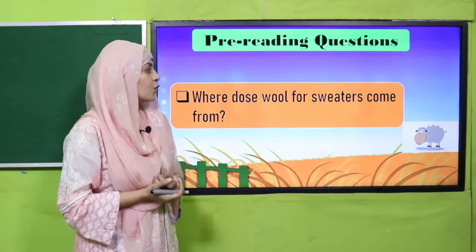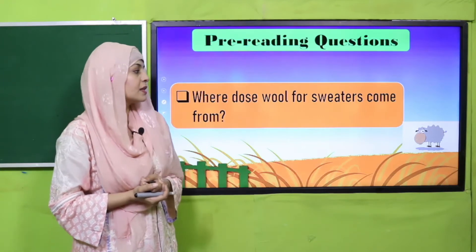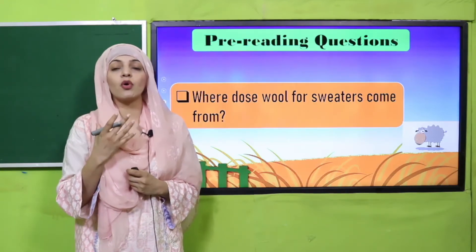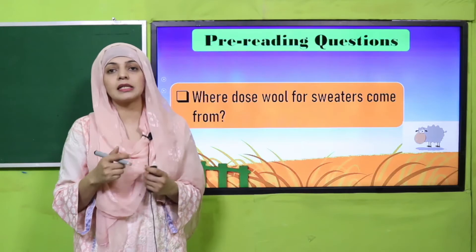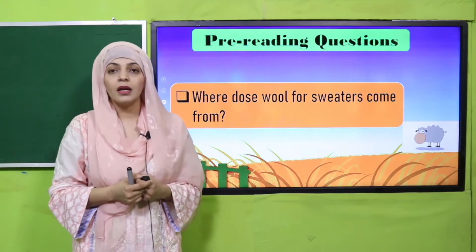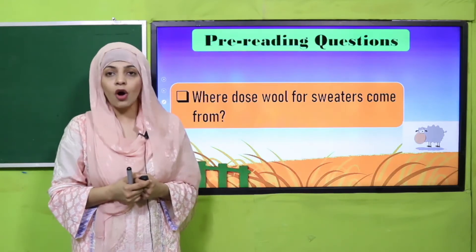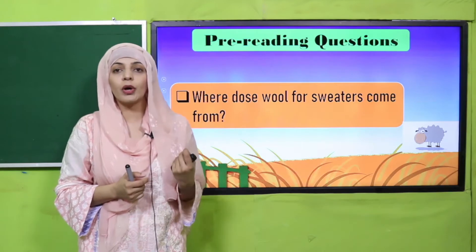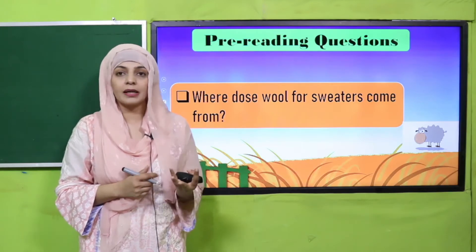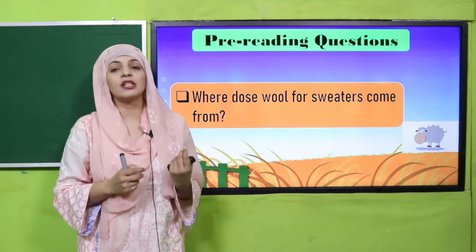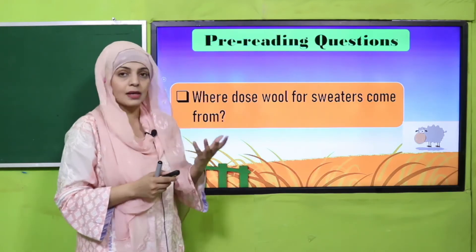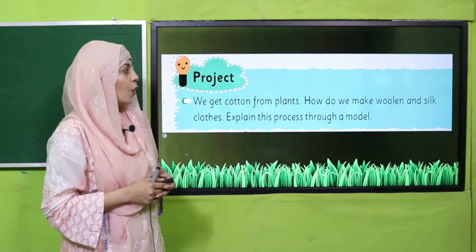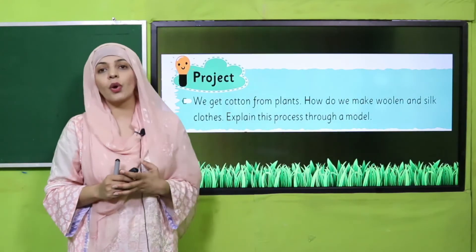Now, where does wool for sweaters come from? Oon jo hai ya wool jo hai woh kahan se aati hai jisse hum sweaters bunte hain? It comes from sheep. Sheep ki jo wool hai woh ham istamal karte hain jisse sweater banta hai.